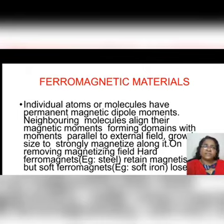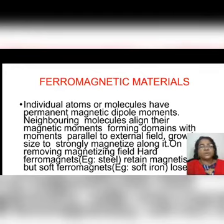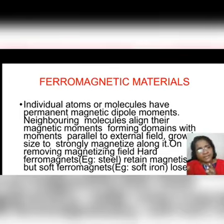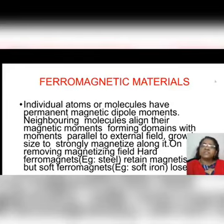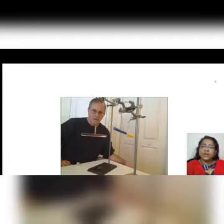When a ferromagnetic substance like soft iron is placed in a magnetic field produced by a current-carrying solenoid, if the current is switched off it will lose its magnetism, unlike steel which will retain it. Depending upon whether it retains or loses magnetism when the external magnetic field is removed, ferromagnetic materials are of two types: soft ferromagnetic materials, which lose magnetism on removal of the field, and hard ferromagnetic materials, which retain the magnetism.